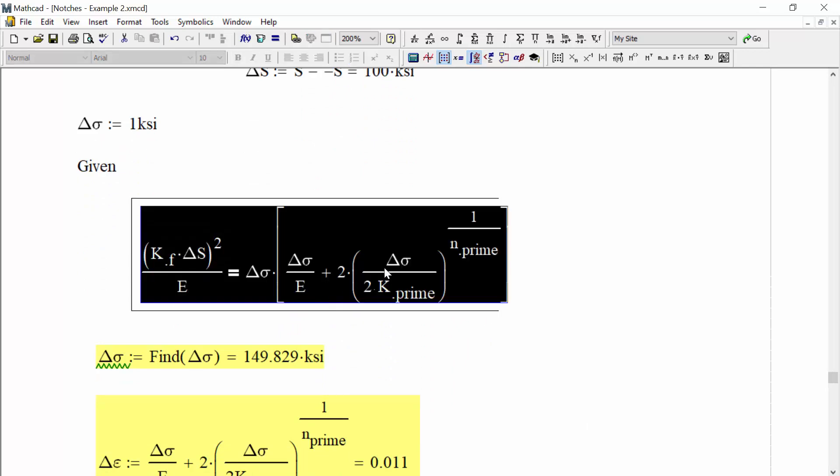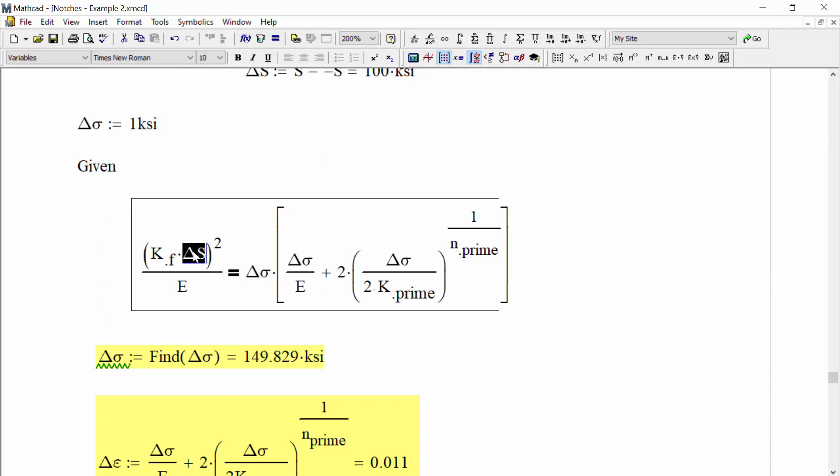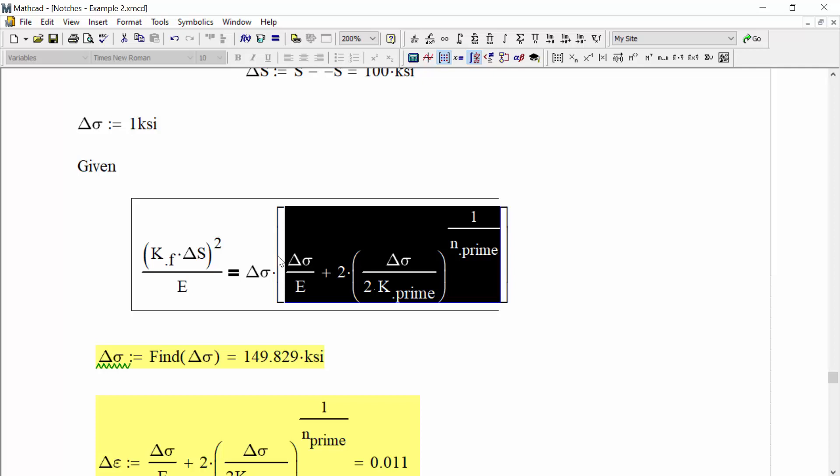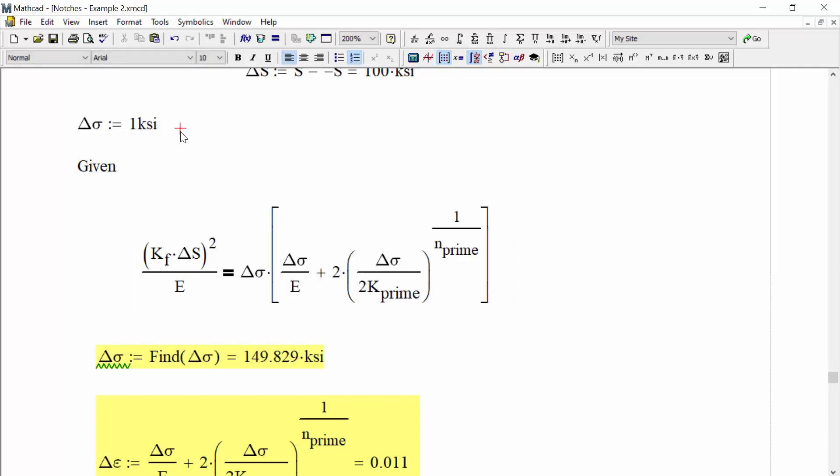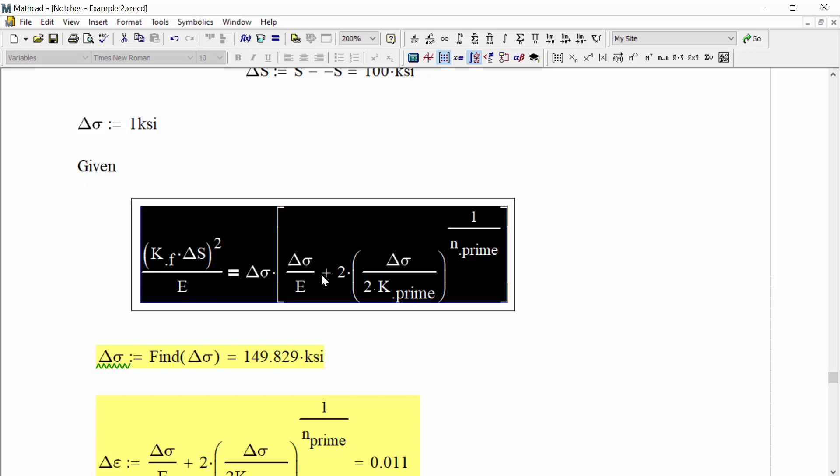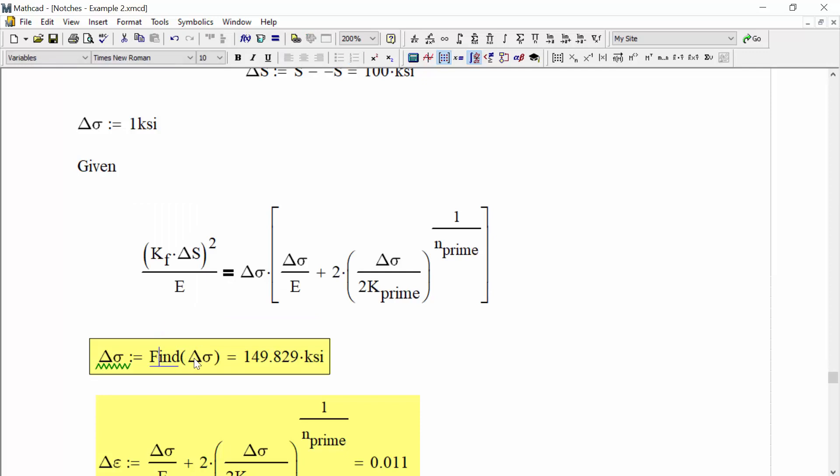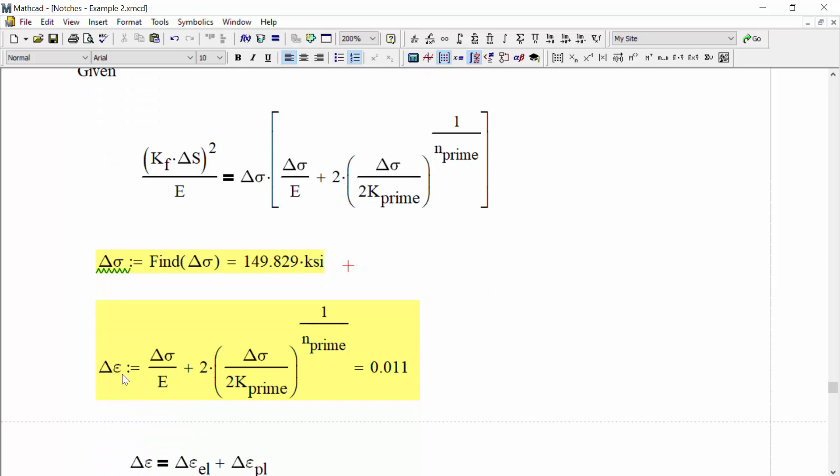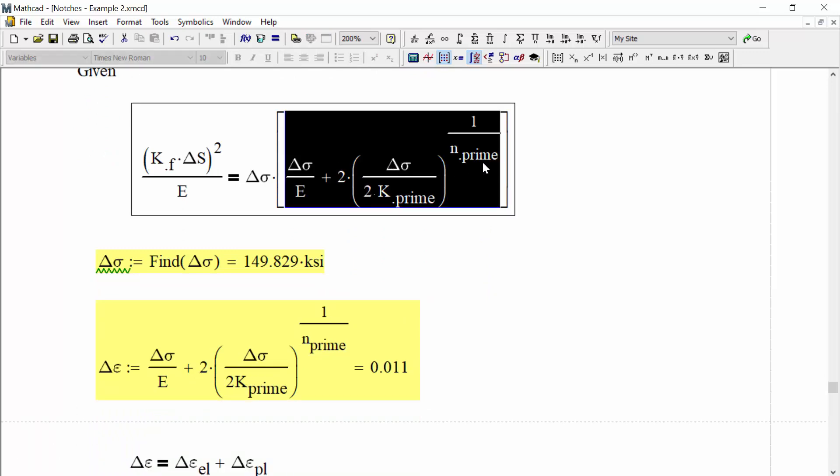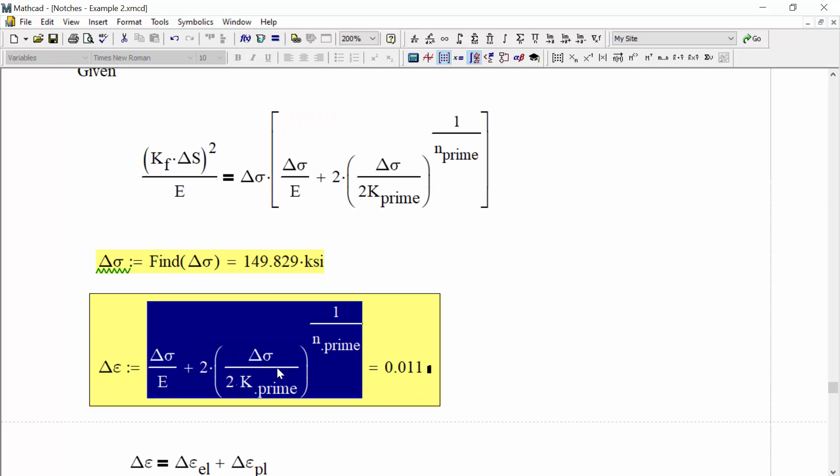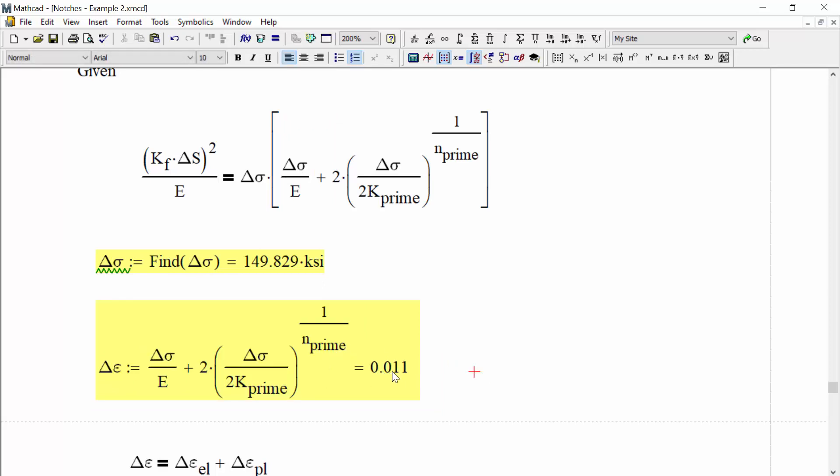So now we can proceed with solving the hysteresis loop form of Ramberg-Osgood. And that is written inside of MathCAD in this form where we replace S with delta S, sigma with delta sigma, and so on. So we're going to solve this using a solve block. We'll set an initial guess for delta sigma as one kSI. We're going to give MathCAD the equation with the left-hand and right-hand side to find. And then we're going to find what that delta sigma is, and we find it to be 149.8 kSI. We also want to get the strain range that we undergo. And that would be this inner portion of Ramberg-Osgood of the hysteresis loop form of Ramberg-Osgood. So we just write that again. We calculate that strain range to be 0.011.